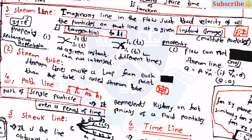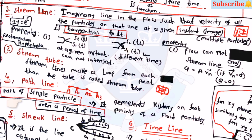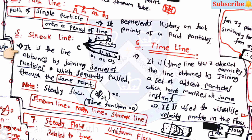A stream tube is formed when streamlines make a loop from each point to form a tube. A path line is the path of a single particle over a period of time and represents the history or footprints of a fluid particle. A streak line is the line obtained by joining a series of particles which sequentially passed through the same point. For steady flow, d/dt equals zero, and streamline equals path line equals streak line.